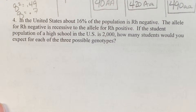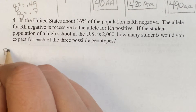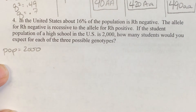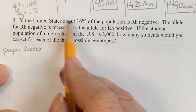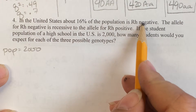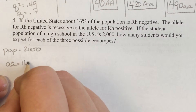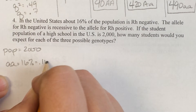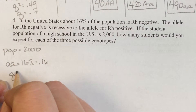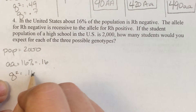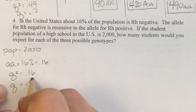In the United States, about 16% of the population is Rh negative. The allele for Rh negative is recessive to the allele for Rh positive. If the student population of a high school is 2,000, how many students would you expect for each of the three possible genotypes? They gave us 16% is negative, which is the recessive trait, so little a little a is 16%, or 0.16. That means q squared equals 0.16, which means q equals 0.4.